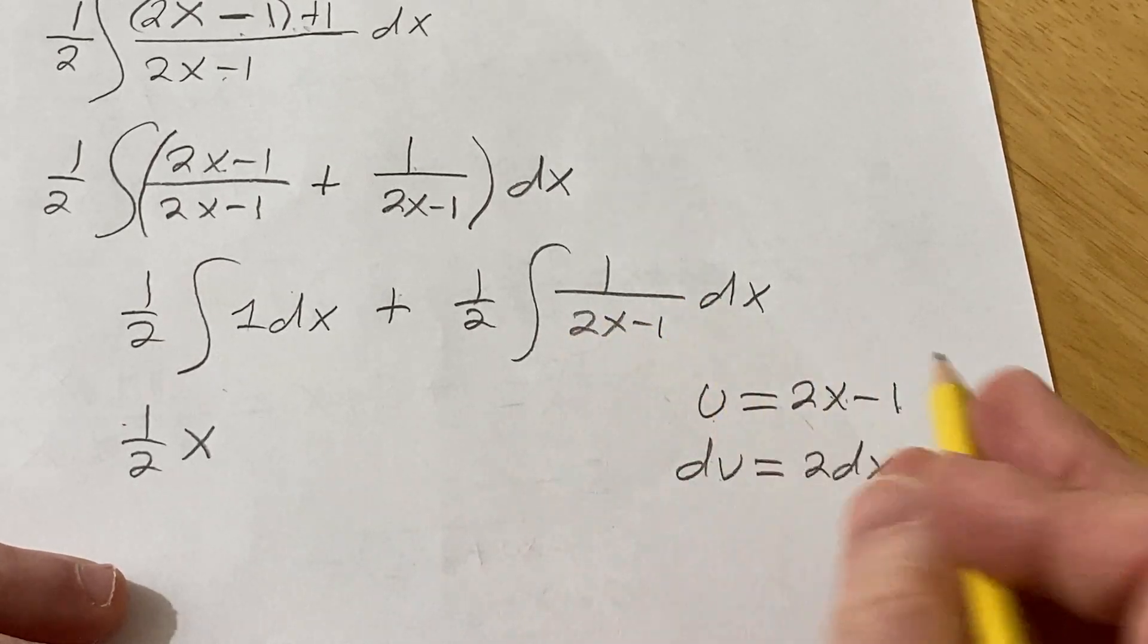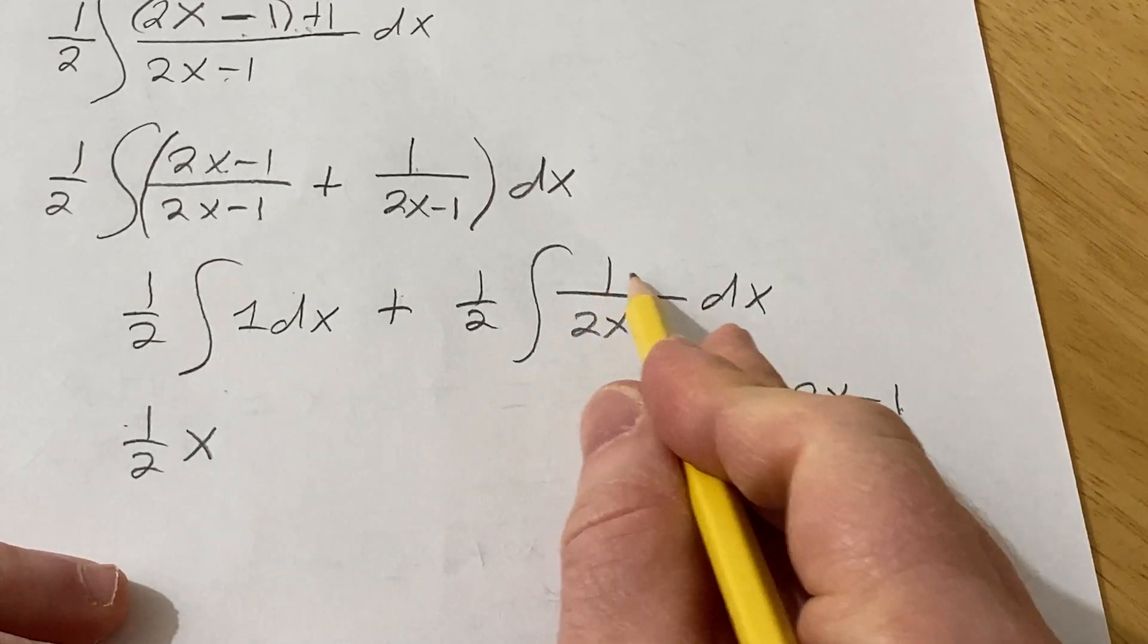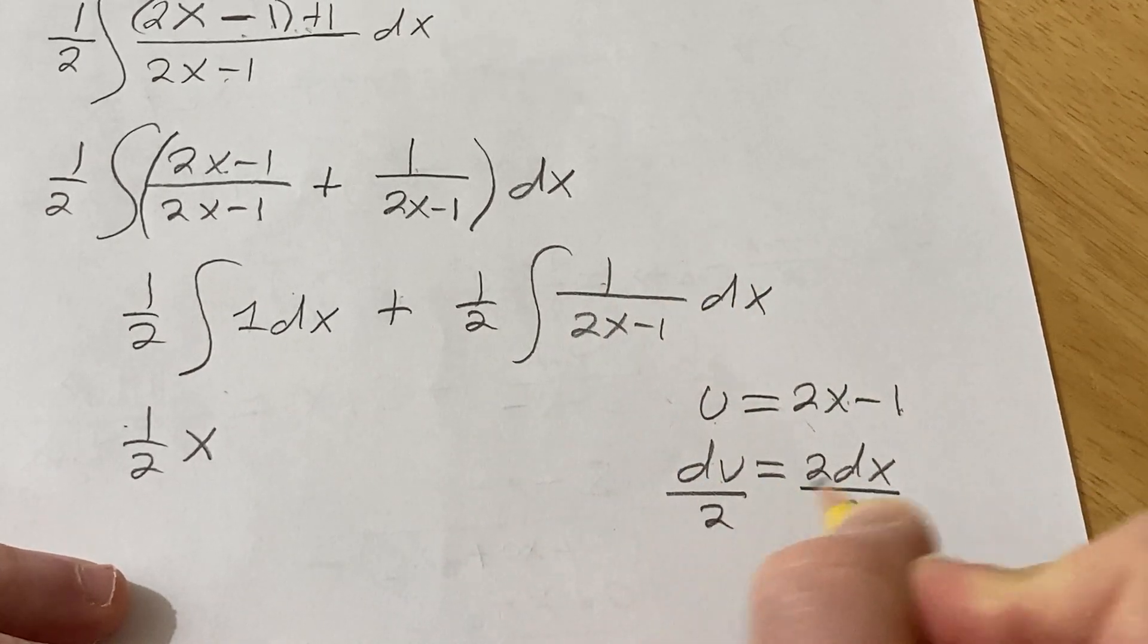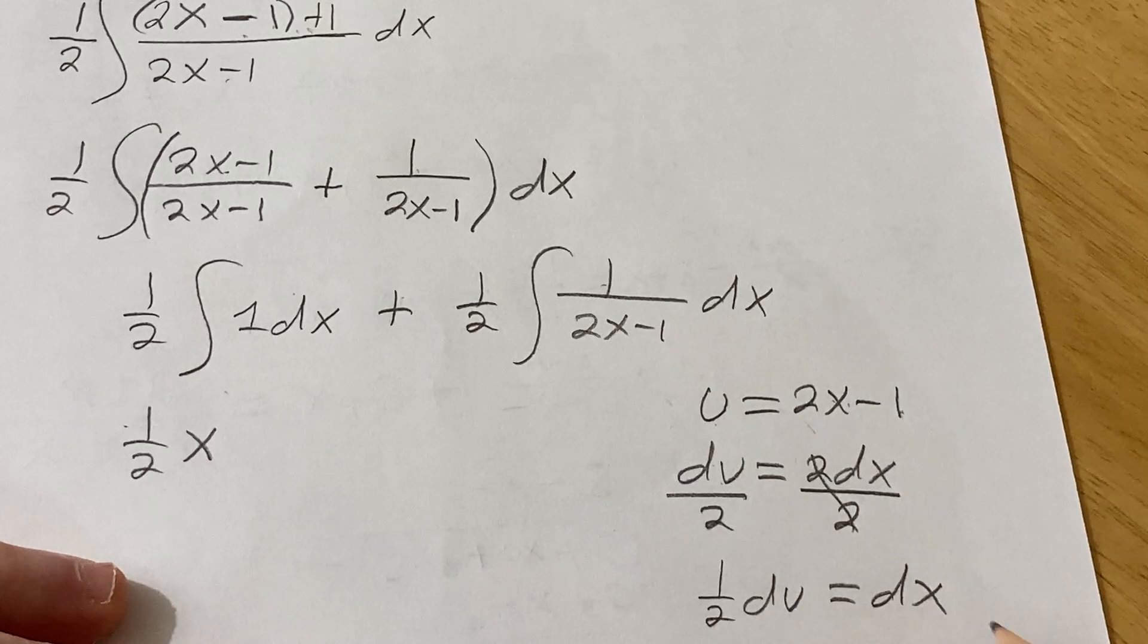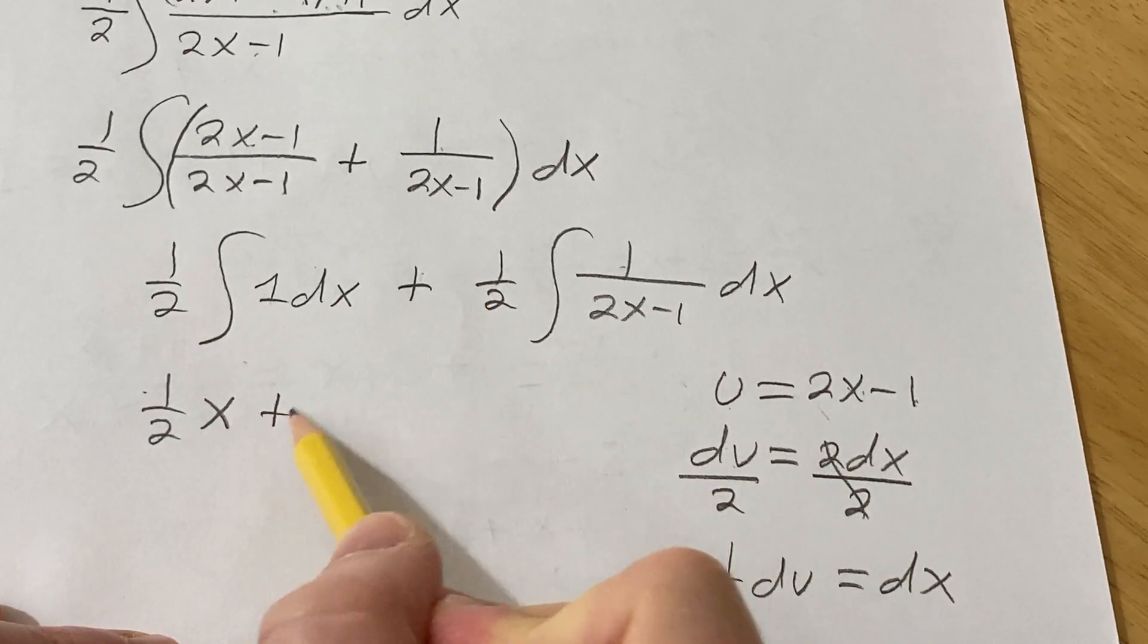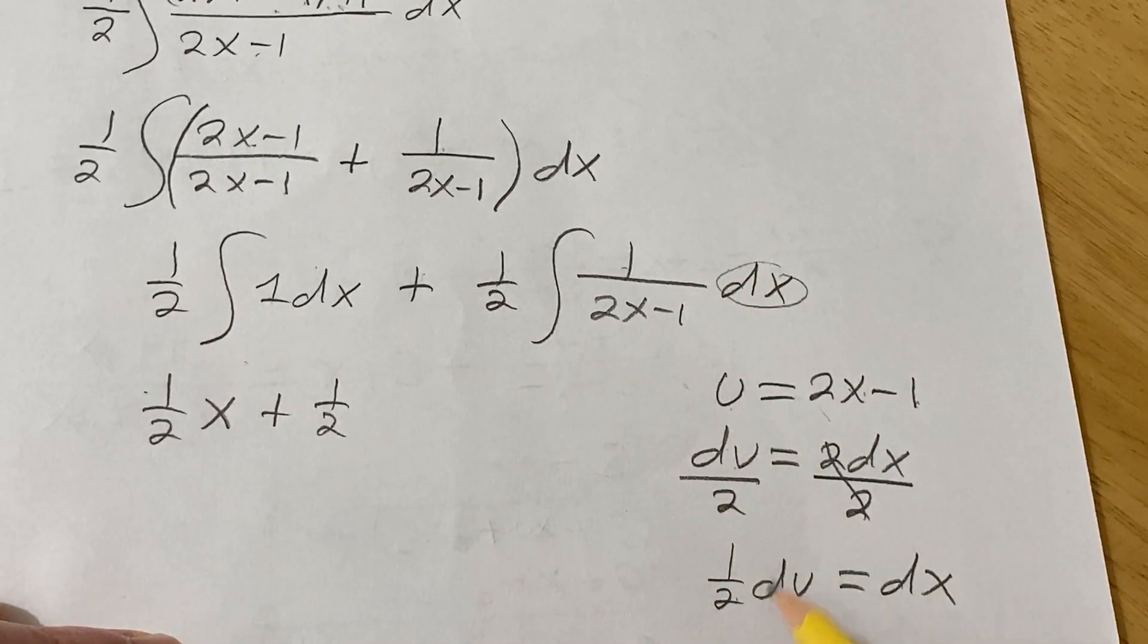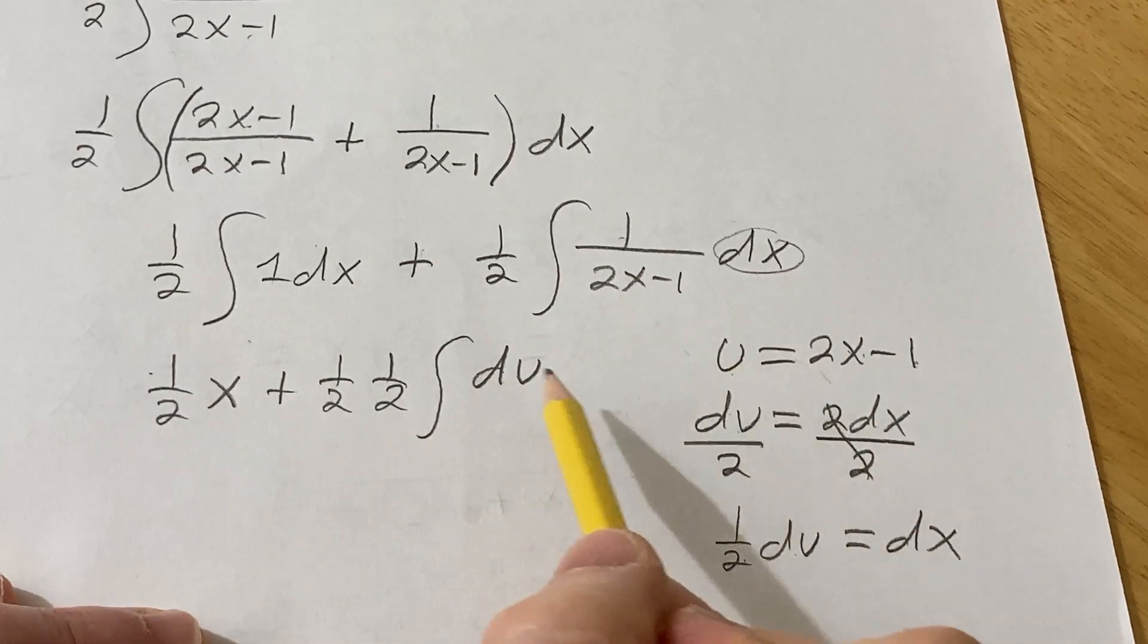There's no 2 here in our integrand, so we have to get rid of this. The goal is to make this look like what's here. We have 1 dx, here we have 2 dx. So we'll divide by 2. This becomes 1 half du. It's the same thing as du over 2 equal to dx. And so now what we'll do is we're going to replace that. So we have this 1 half here. The dx is going to give us another 1 half from the du. And the bottom piece here is just u.